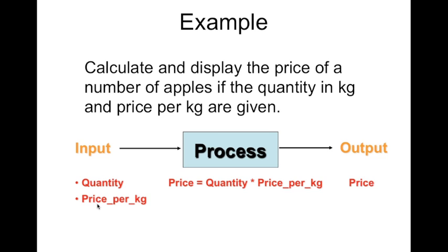And the second input is the price per kilogram of the apples. To calculate the final or actual price for a given amount of quantity of apples, we just need to multiply the quantity with the price per kilogram. And we get our output or the price. Now this is a process. A process is usually a mathematical step to produce our output.